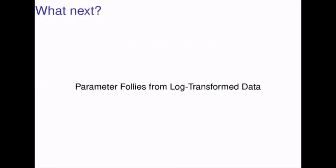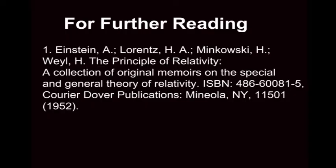What's next? We will next present a video about parameter follies from log-transform data. We will run through the problems of data noise and variance which cannot be corrected using log transformation. We will present an example of problems from astrophysics where log transform is used liberally, and show that data transformation can lead to incorrect results, with examples of where astrophysicists have been led astray by the use of log-transform data. We will see you next week. Thank you.